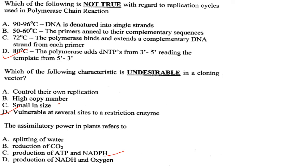Assimilatory power in plants refers to the production of ATP and NADPH. Answer is option C.